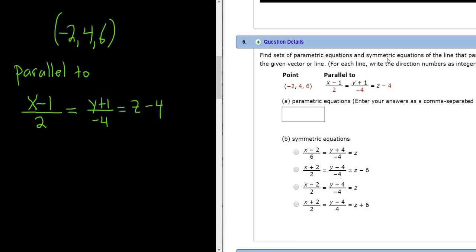In this problem, we have to find parametric equations and symmetric equations for a line that passes through the point (-2, 4, 6) and that is parallel to this line here given by symmetric equations. So we have to enter the parametric equations and then pick the correct choice for the symmetric. Let's go ahead and work through it.